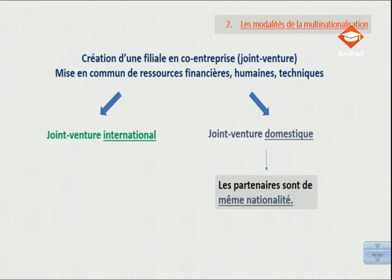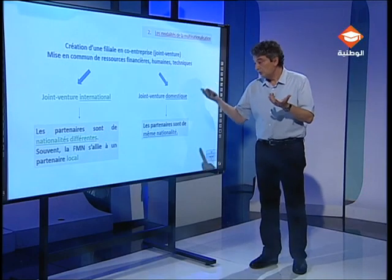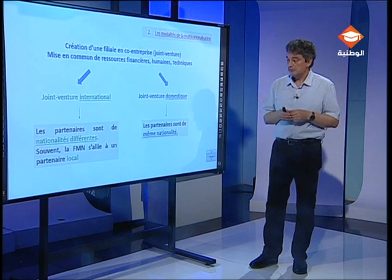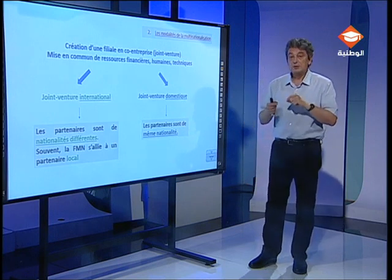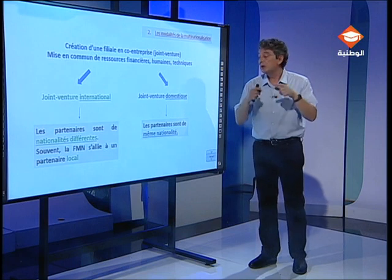Le joint-venture, c'est donc le fait de créer une filiale commune entre la firme multinationale et un partenaire, avec mise en commun de ressources financières, humaines et techniques. Si ce partenaire a la même nationalité — par exemple, si une firme multinationale française s'associe avec une autre firme multinationale française pour créer une filiale au Maroc — on parle de joint-venture domestique. Par contre, si les partenaires n'ont pas la même nationalité, on parle de joint-venture internationale. Souvent, dans le cadre d'un joint-venture international, la firme multinationale s'allie à un partenaire local.